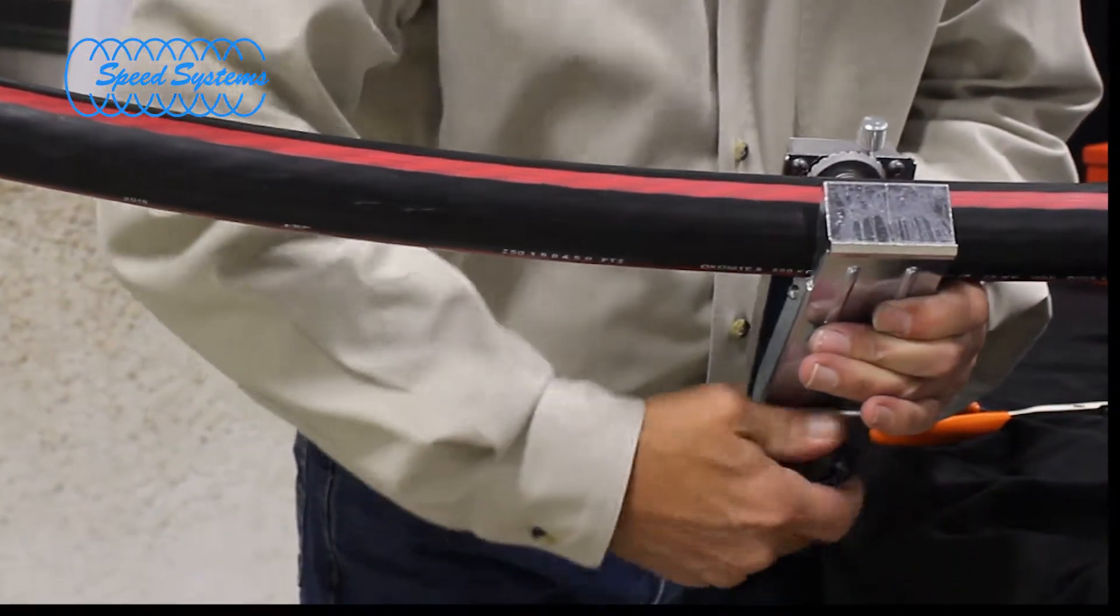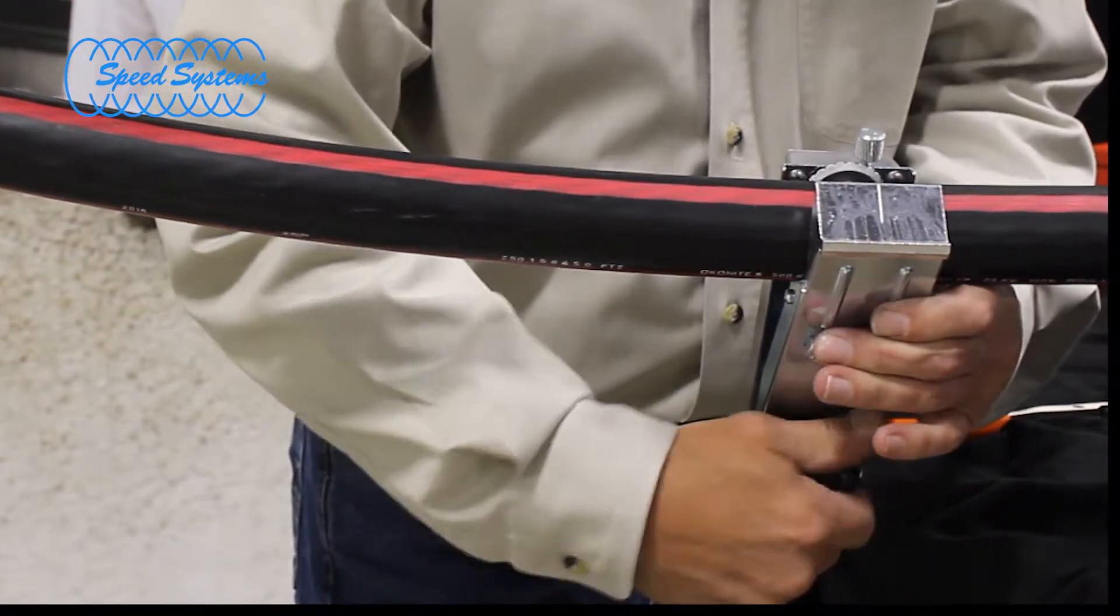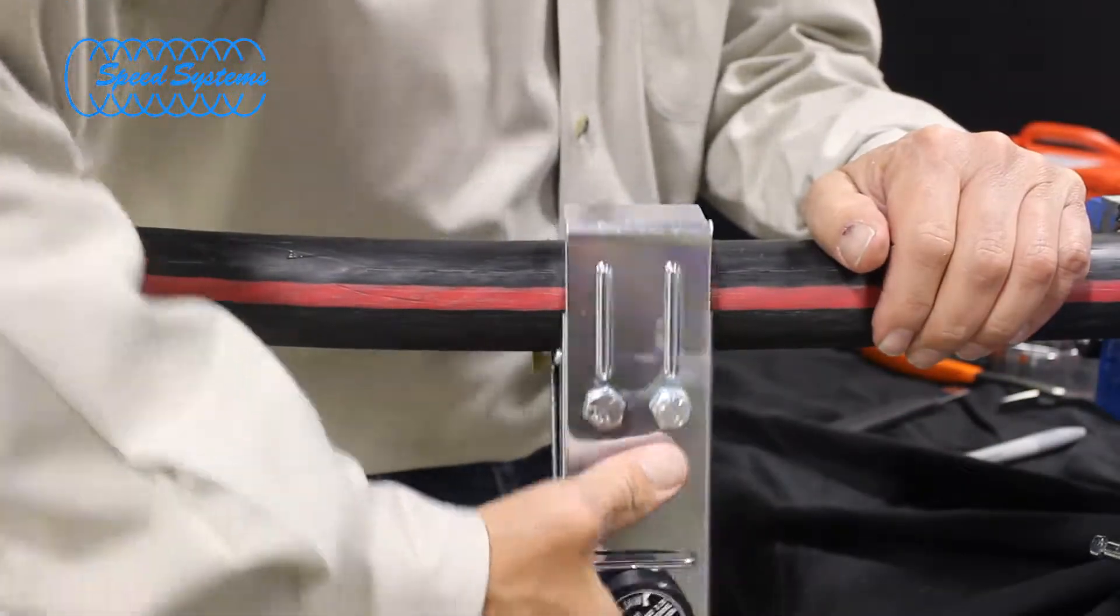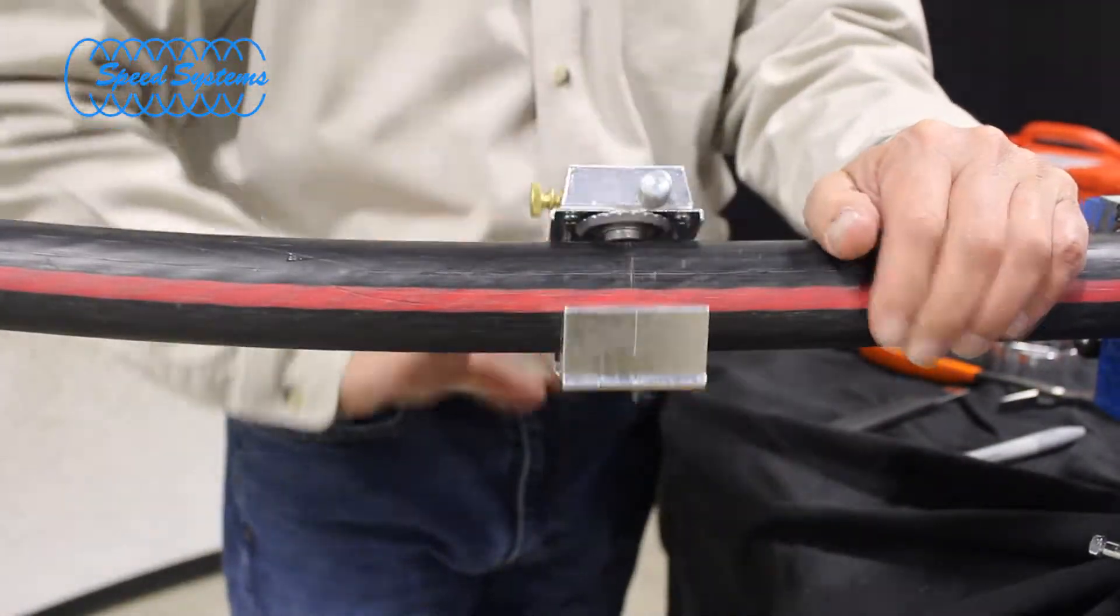Place the tool onto the cable at your mark and turn the knob clockwise until the springs take over and the knob turns freely. Make several revolutions with the scorer. Loosen the jaws and remove the tool from the cable.